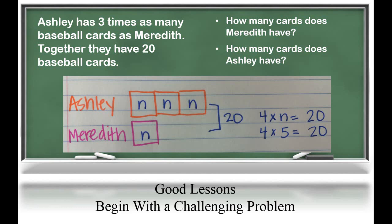What we don't know is how many cards Meredith has, so Meredith must have N cards. If Meredith has N, we know Ashley has three groups of those N. We know that all together that equals 20 cards, so we have four groups of N equals 20 — four times N equals 20. Four times five equals 20, so N must equal five. If Meredith has five cards, Ashley has those 15 cards, just like we did in that last problem.